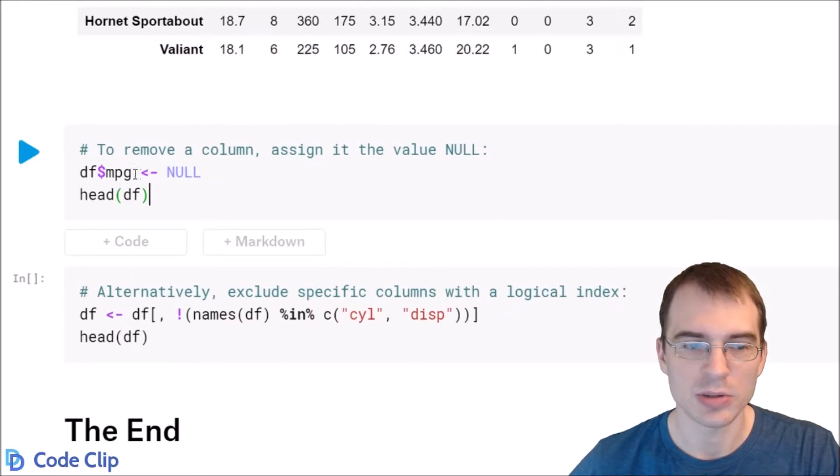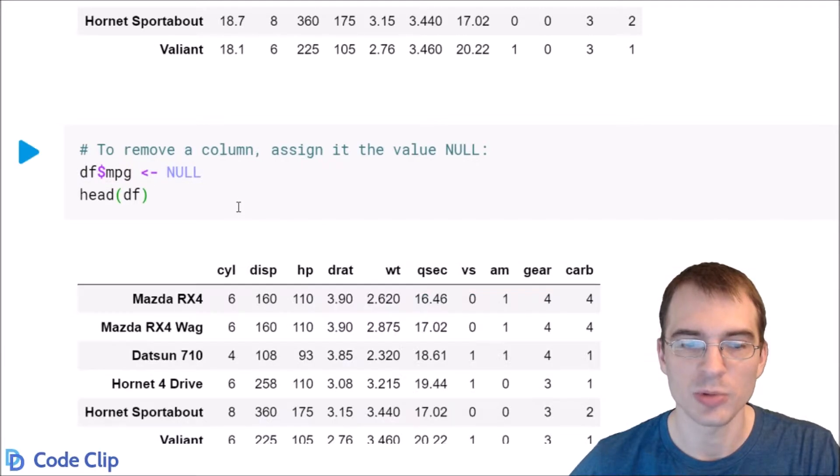All you do is select the column you want to remove, so here we're selecting mpg, and then you just assign it the value NULL. When you do that, the column will be removed.